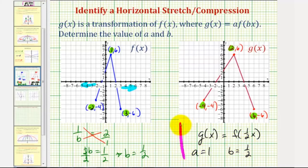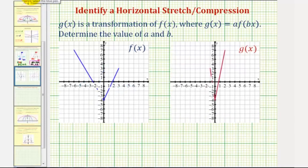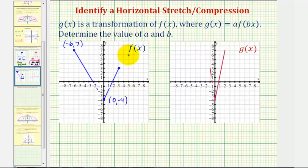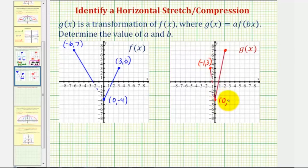Let's take a look at a second example. Again, let's find the coordinates of key points on each graph. For f of x, we have negative 6 comma 7, zero comma negative 4, and 3 comma 3. And then for g of x, we have negative 1 comma 3, zero comma negative 4, and 2 comma 7.